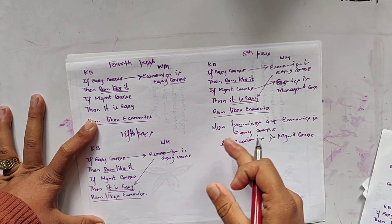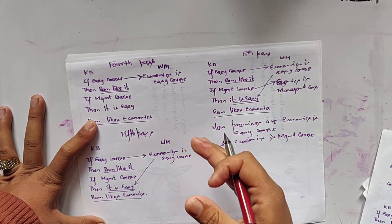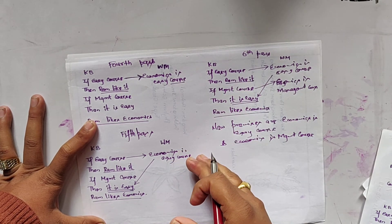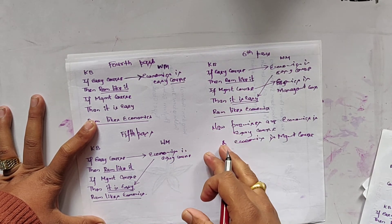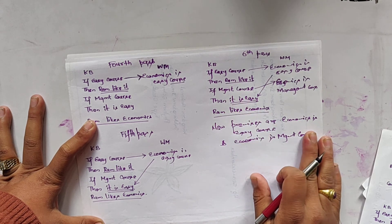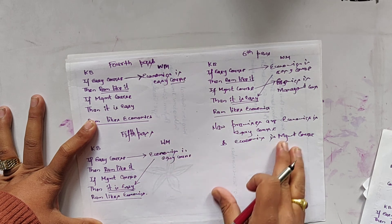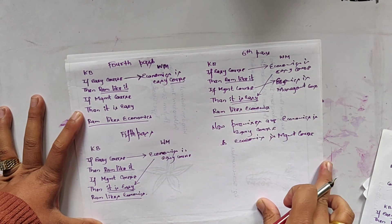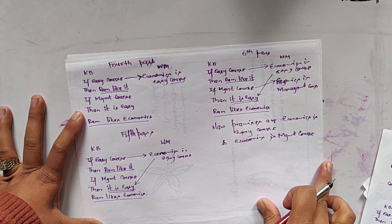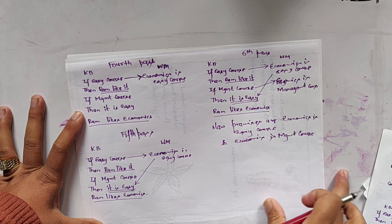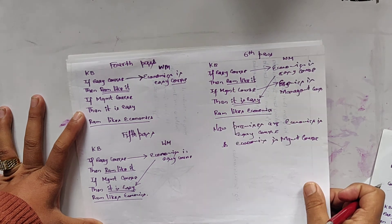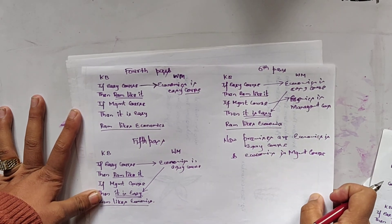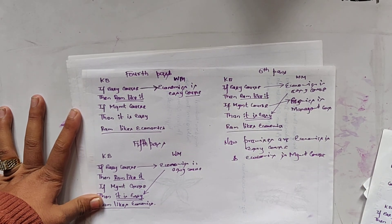From these premises we check whether it generates a goal or not by following the same process as forward chaining. This is the process used in backward chaining for the inference mechanism in expert systems. Thank you and bye-bye.